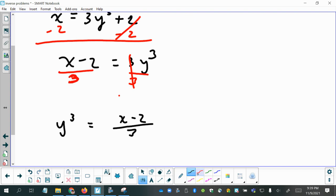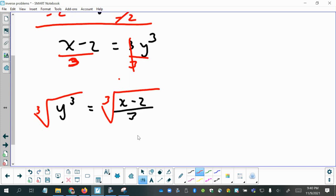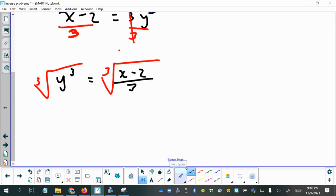Then we're going to take the cube root of both sides to get rid of that exponent of 3. And so I have y equals the cube root of x minus 2 over 3.